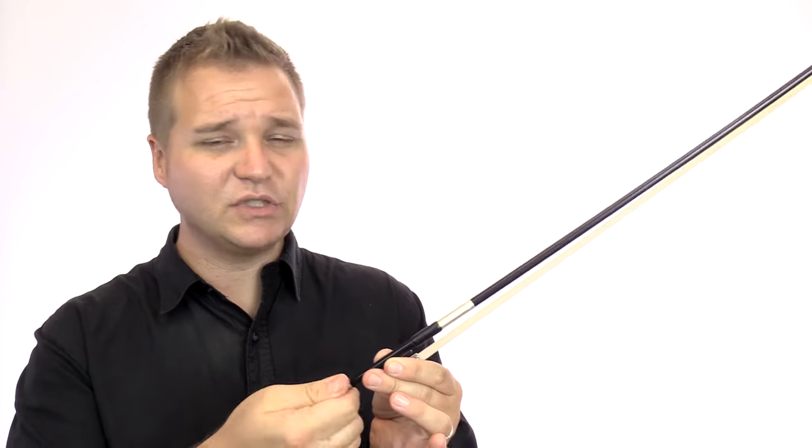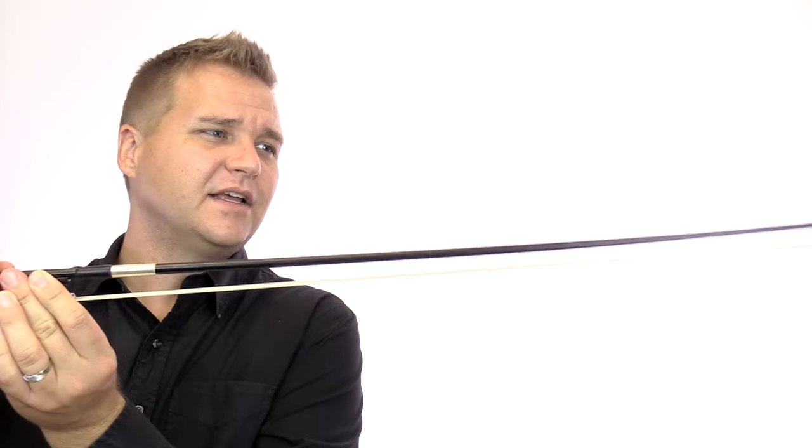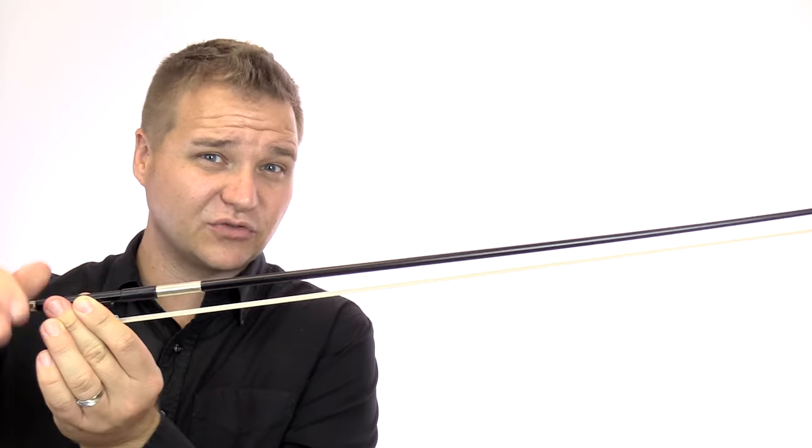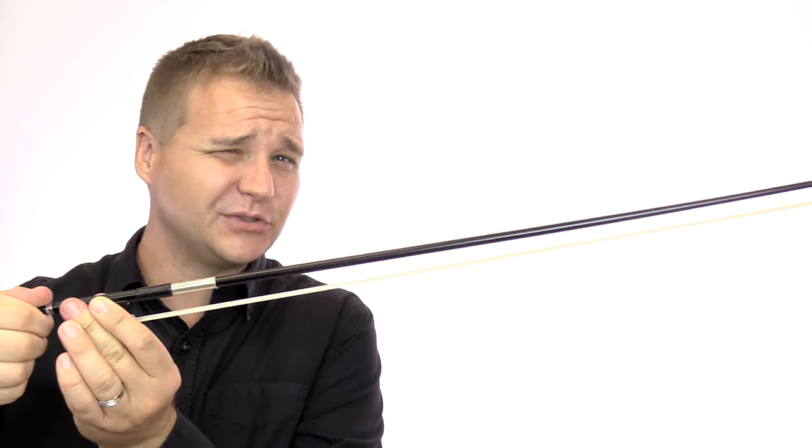Start by tightening up the hairs by turning the screw clockwise. I'm just bringing it up to normal playing tension. The stick should still have some curve to it. Don't over tighten it so that the stick is completely straight and parallel with the hair. That's too tight.